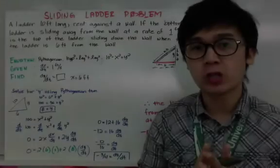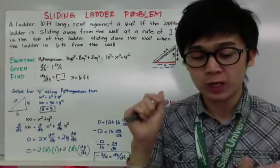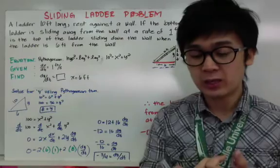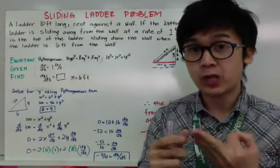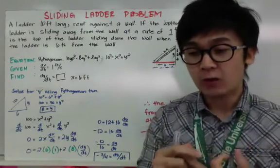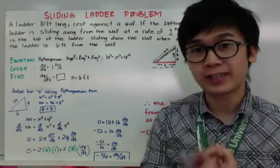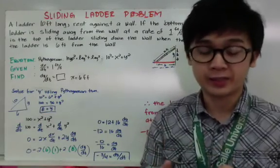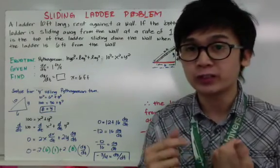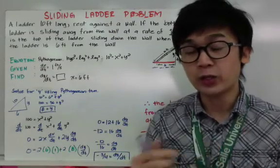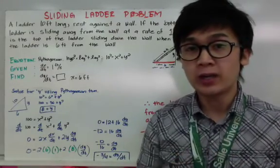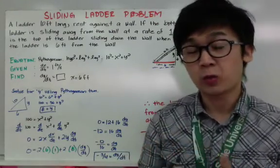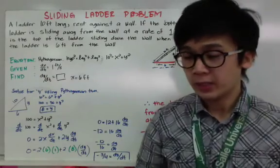A recap of what we know about solving a related rates problem: one, you need to know the given rate; two, you need to know the given equation; and three, you need to know what you need to find. On the equation, sometimes the formula is given in the related rates problem, but most often it is not given, so you need to memorize some geometric formulas from geometry, like the area of a circle, volume of a sphere, area of a square, or volume of a cube.